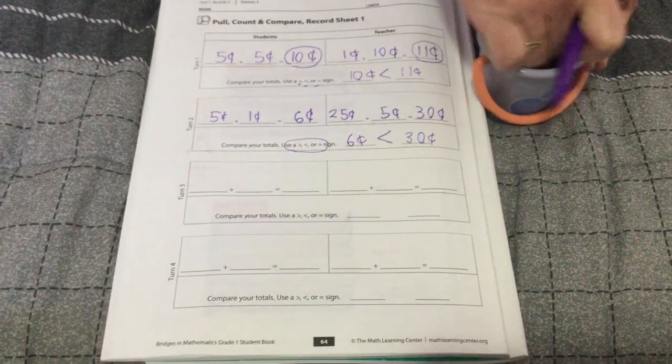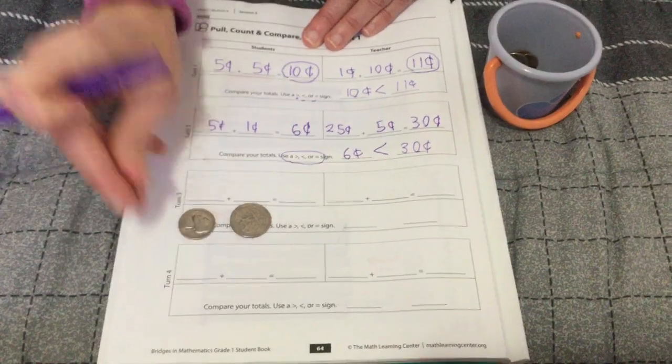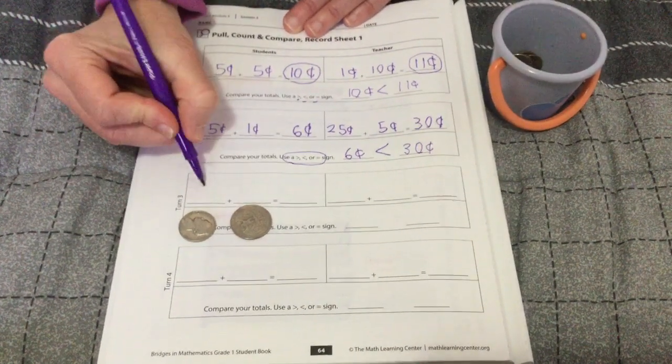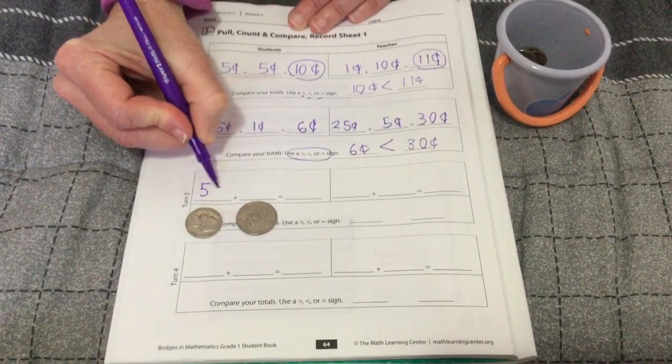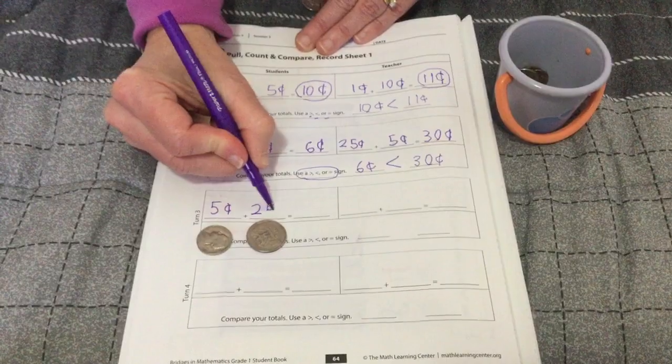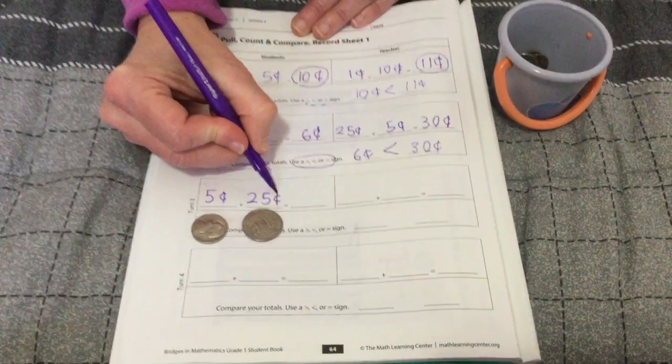All right, again friends. Same thing as both before, right? Five cents plus twenty-five cents. This is the cents sign. It's a little c with a line. Equals thirty cents.